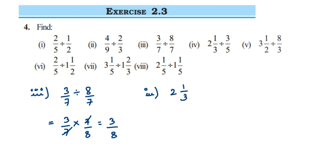Fourth question: 2 and 1 by 3 divided by 3 by 5. First we convert the mixed fraction into an improper fraction: 2 threes are 6, and 6 plus 1 is 7, so we get 7 by 3. Then division becomes multiplication.